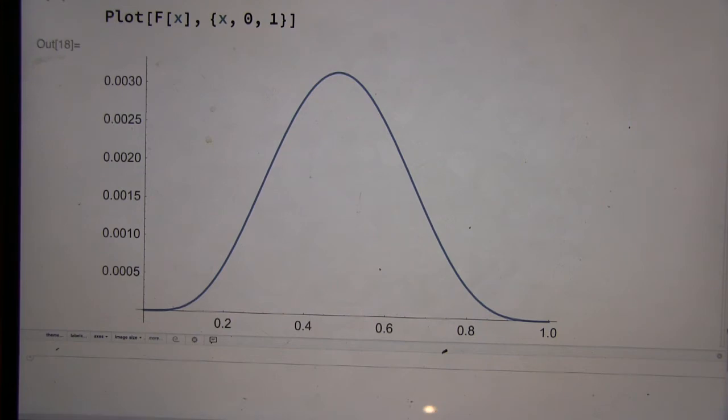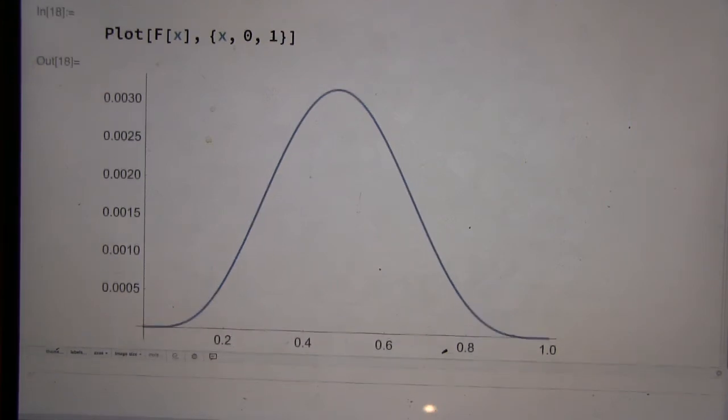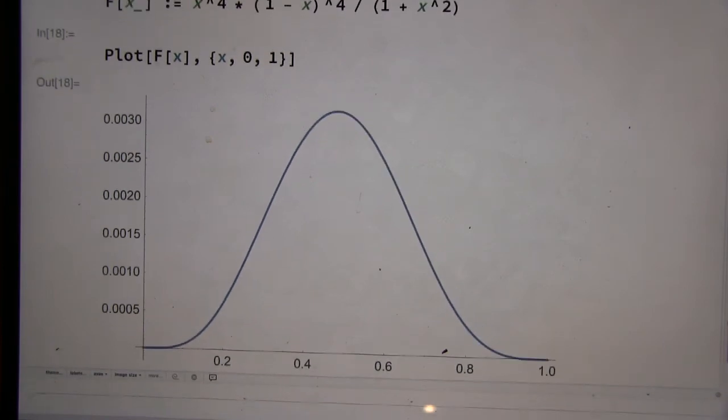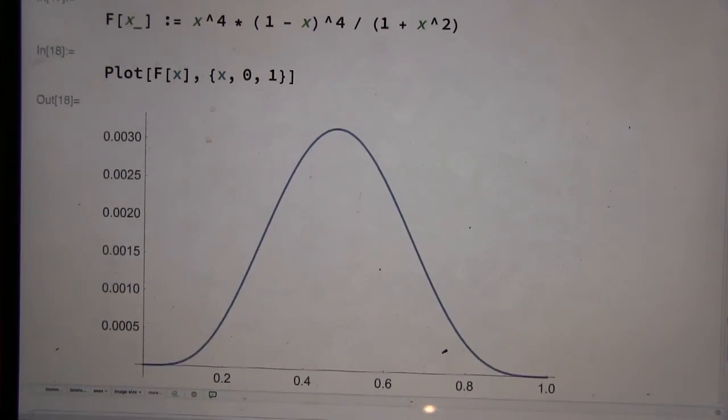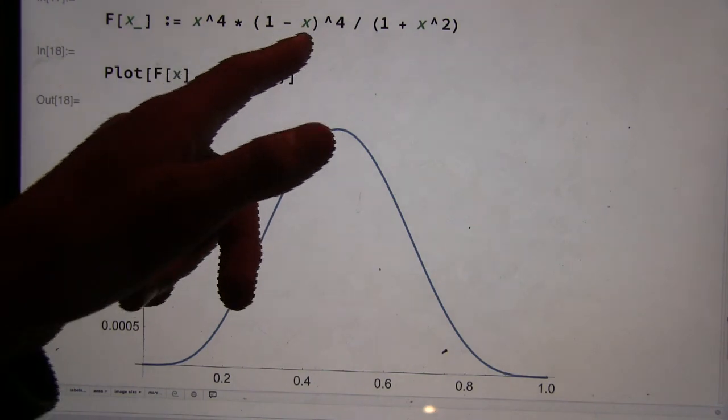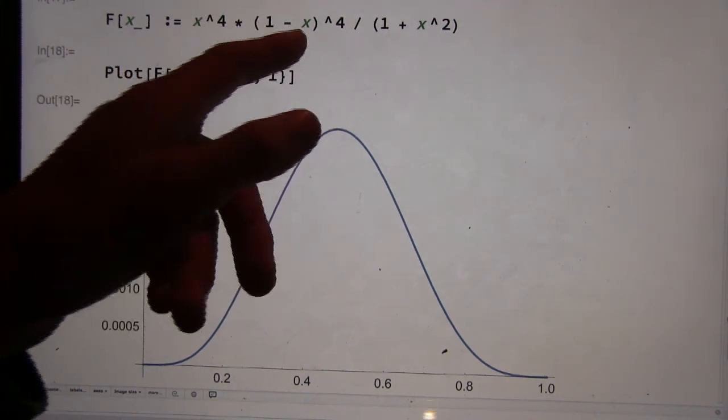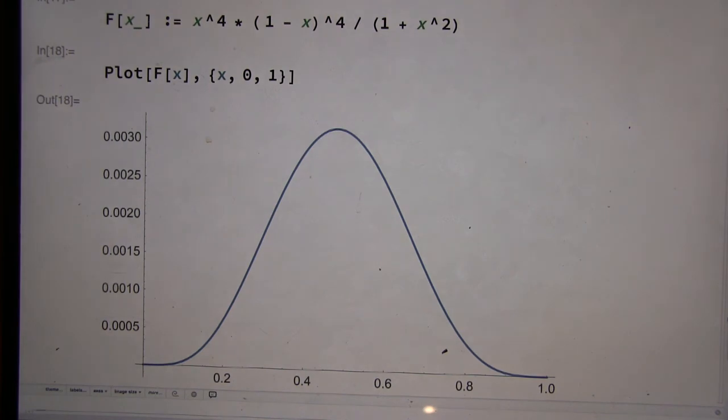And the maximum value does kind of look like it's around 0.5. Does it surprise you that the maximum value is so small, around 0.03? Not really, because we've got—well, because this is going to be a pretty small number here. Uh-huh. And the top's going to be pretty small. Okay. Because it's both less than, the number's less than one raised to the fourth power, and the bottom isn't that big either. Okay. So it's not too surprising that it's small.